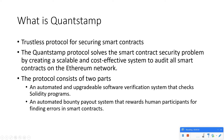Quantstamp is a trustless protocol for securing smart contracts. It runs on the Ethereum blockchain. The Quantstamp protocol solves the smart contract security problem by creating a scalable and cost-effective system to audit all smart contracts on the Ethereum network. The protocol consists of two parts: an automated and upgradable software verification system that checks Solidity programs, and an automated bounty payout system that rewards human participants for finding errors in smart contracts.